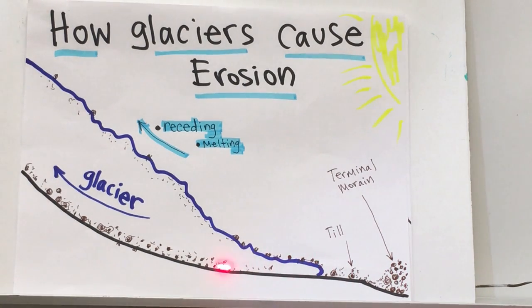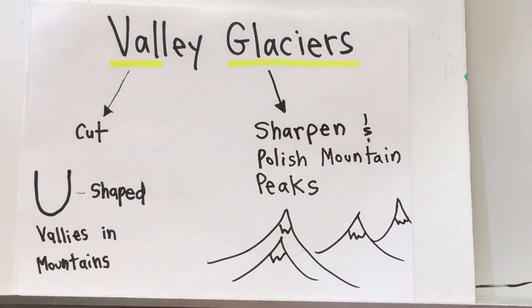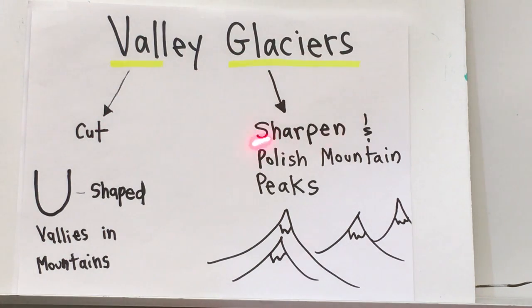The other particles that are left behind as the glacier retreats are called till. Valley glaciers cut U-shaped valleys into mountains. Valley glaciers also sharpen and polish mountain peaks.